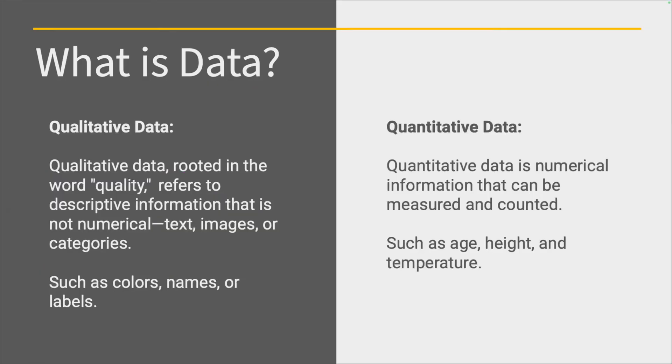Now we know that data is information that can be collected, measured and analyzed, and it can be numbers, text, images, or other types of information. But now we're going to get more granular and talk about the two big categories of data, qualitative and quantitative. So what I would suggest here is to think about the root of the word.